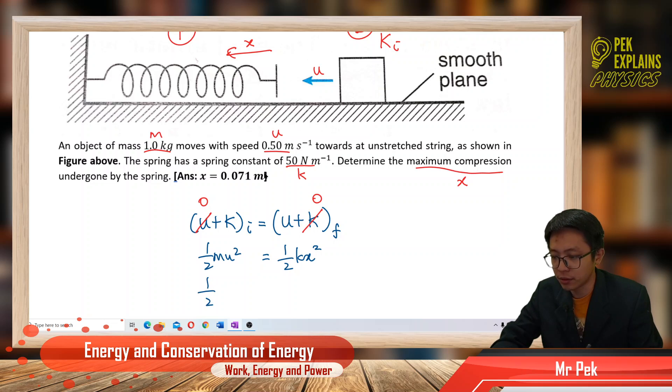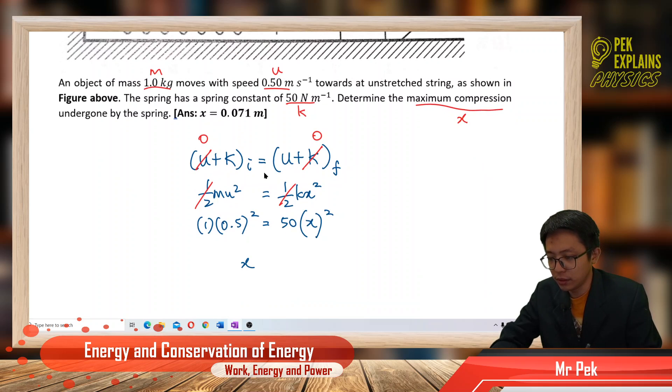Let's substitute all the information. The half cancels off. We have mass equals 1 kilogram, velocity equals 0.5 squared, and spring constant equals 50. Solving for the maximum compression x, we get the answer: 0.071 meter.